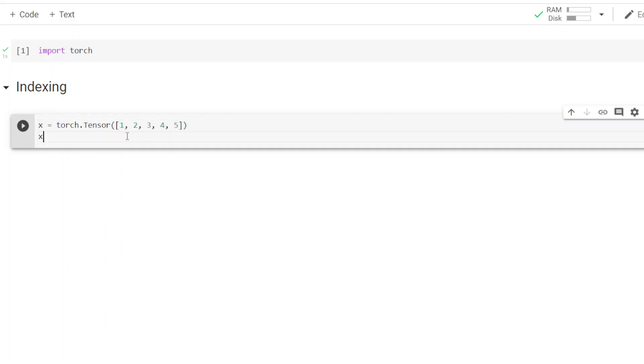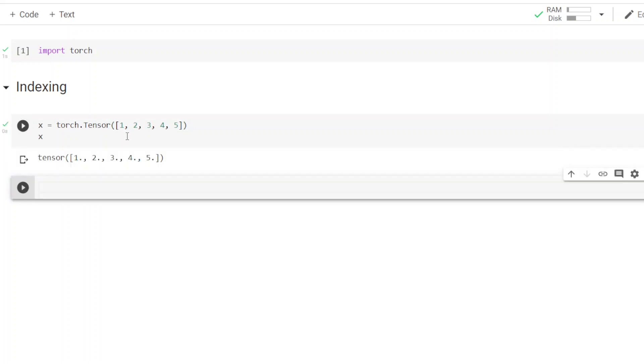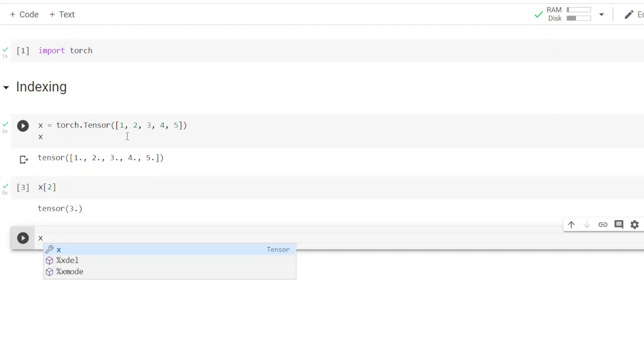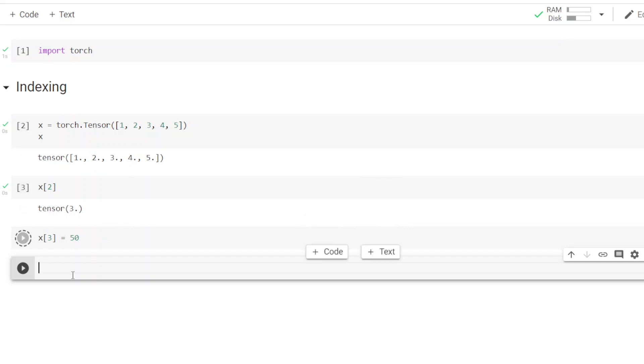Let's create a tensor x, the same tensor. Let's print x, let's print some index. Now let's modify some index and after modifying print x.